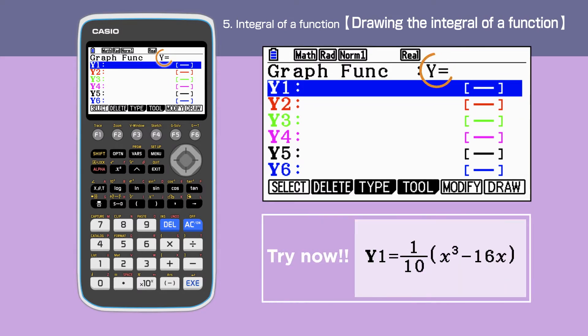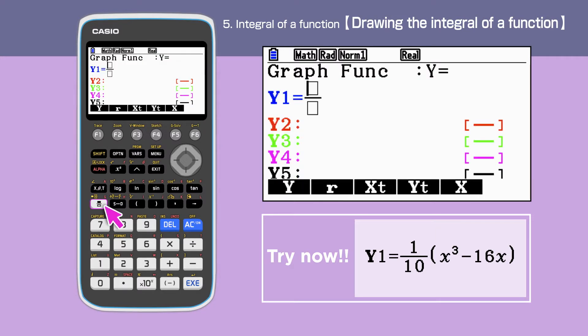Check that the graph function shows y equals, then we first draw the graph of y1 equals 1 over 10 bracket x cubed minus 16x.